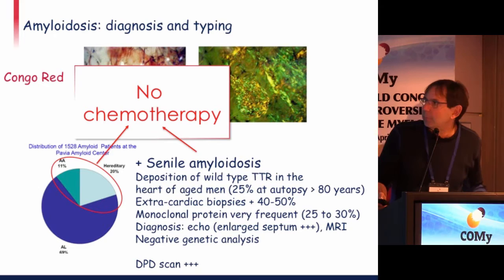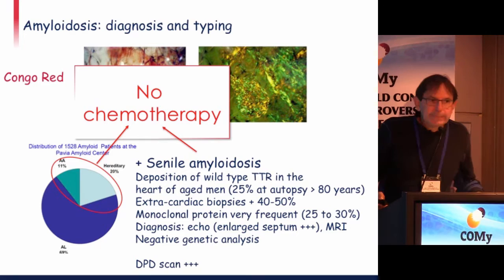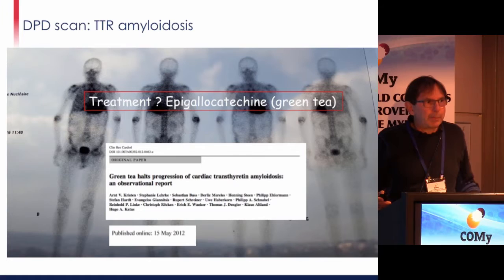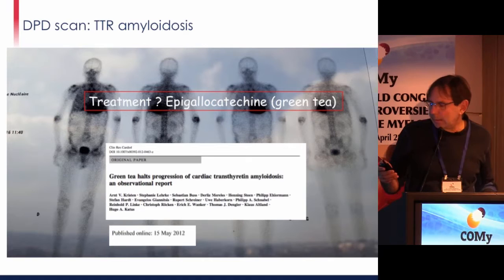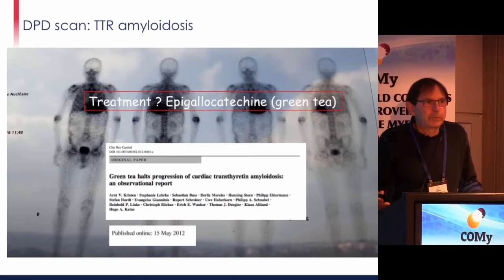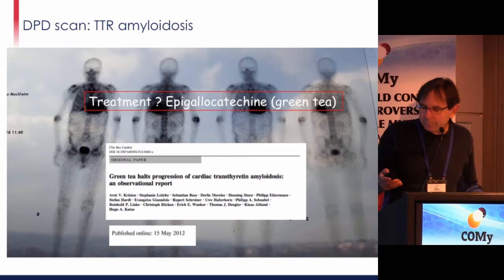You must not give chemotherapy to these patients. To diagnose TTR amyloidosis you have to do a DPD scan, as in this old patient where there is very important fixation on the heart, peculiar to this form of amyloidosis. It can distinguish between AL amyloidosis and TTR amyloidosis. As for treatment, you can give green tea — discussed yesterday regarding drug prices — which costs 10 euros per month and could be efficient in this particular form.